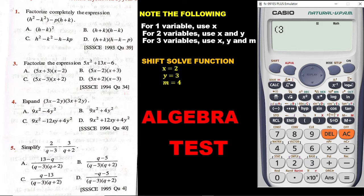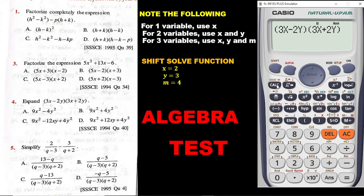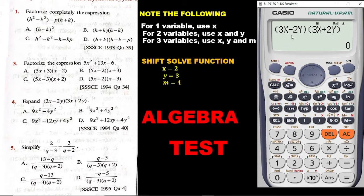So we have 3X: press 3, alpha X, then minus 2Y: press 2, then alpha Y. Close the bracket. Then open another bracket, we have 3, alpha X, then plus 2Y: plus 2, then alpha Y. Close the bracket. Be sure you have entered exactly what we see in the question. Once satisfied, press solve. In place of X put 2, in place of Y put 3. We are getting 0. So when X equals 2 and Y equals 3, the result is 0.